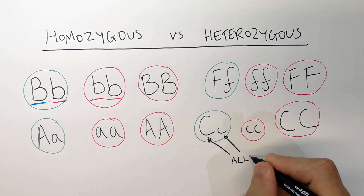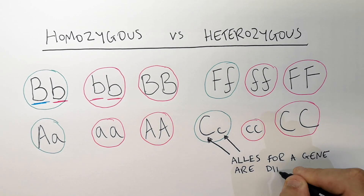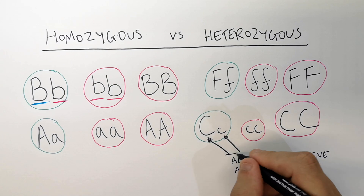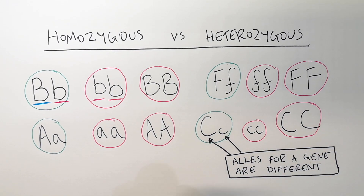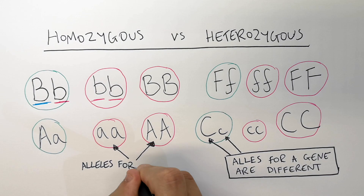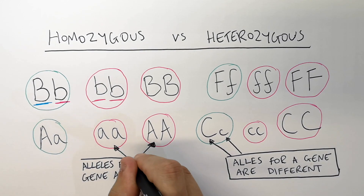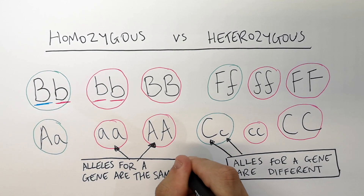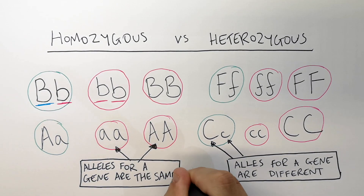Big C, big C shows that the alleles for a gene are different, which means that the person is heterozygous. Whereas if the alleles for a gene are the same, the person is homozygous. Homozygous is when the alleles for a gene are the same.